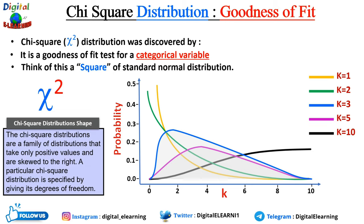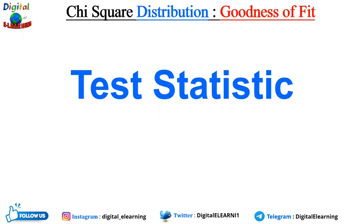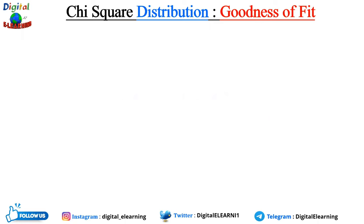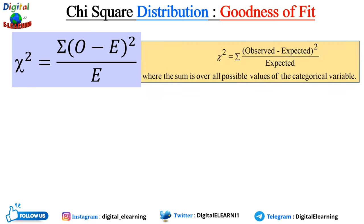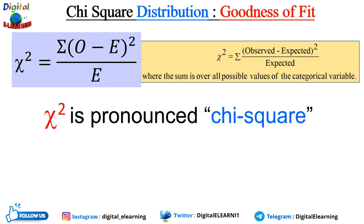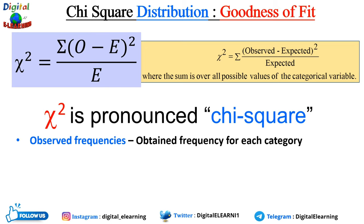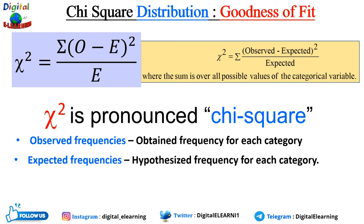Now let's look at the test statistics for chi-square distribution. The formula is: chi-square equals the summation of (observed minus expected) squared, divided by expected values, where the sum is over all possible values of the categorical variable. The observed frequencies are the obtained frequencies for each category, and the expected frequencies are the hypothesized frequencies for each category.